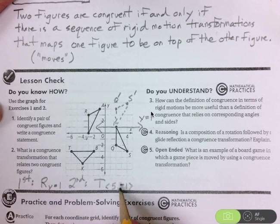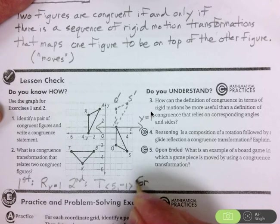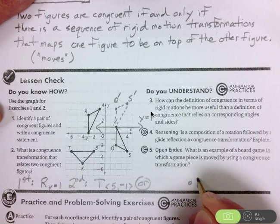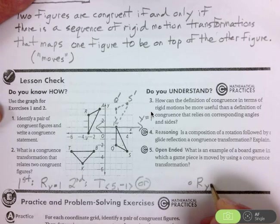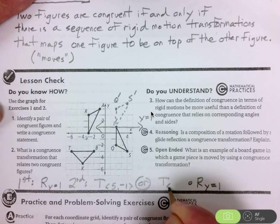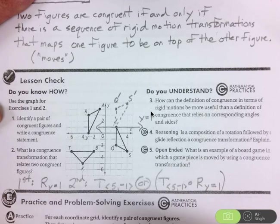So notice there's another way to write this. You could write it this way, or if you wanted to, you could write it as a composition. First, we reflect over y equals 1, and then we translate it. Second, 5 right and down 1. This is what the composition would look like.